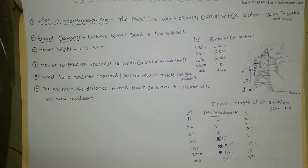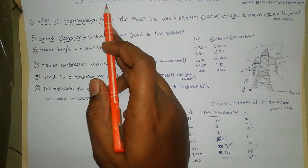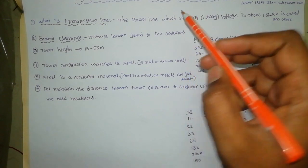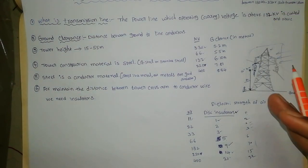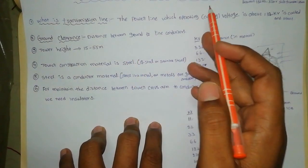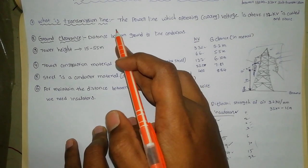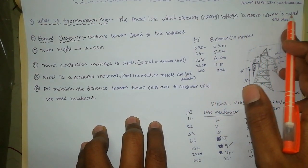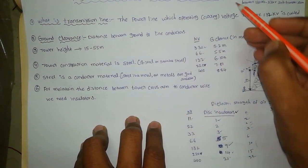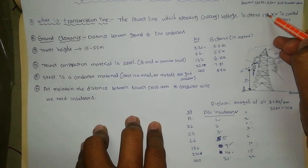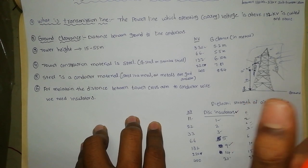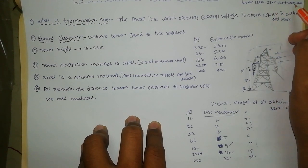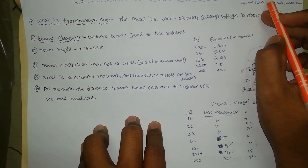Why are insulators used in transmission lines? First we need to know some terminology. A transmission line is a power line carrying voltage above 132 kV. If the operating voltage is between 132 kV and 33 kV, it is a sub-transmission line. If the operating voltage is below 33 kV, it is a distribution line.